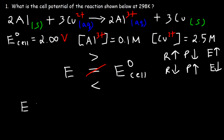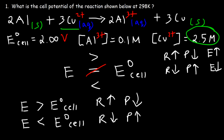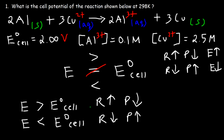The non-standard cell potential is greater than the standard cell potential when you have a large amount of reactants or a small amount of products. It is less than the standard cell potential if you have a small amount of reactants and a large amount of products. In our problem, Cu²⁺ is a reactant at 2.5 M and aluminum is only 0.1 M product, so the non-standard cell potential should be greater than 2 volts.